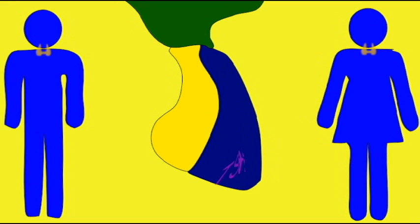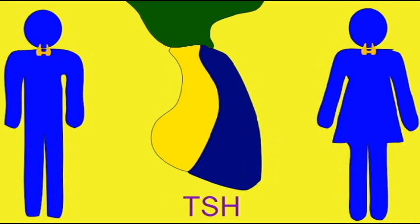The anterior pituitary is often known as the master gland because it secretes a number of hormones which then regulate other glands. The anterior pituitary secretes thyroid stimulating hormone, or TSH, which regulates the activity of the thyroid gland.